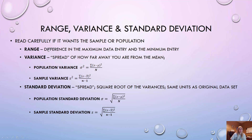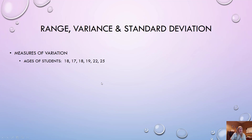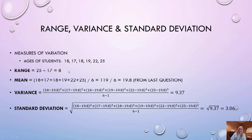Most of you will use a calculator or StatCrunch for variance and standard deviation, but I'll show the manual method too. Range is simply max minus min. Be careful whether the question says population or sample, because that affects what you divide by in the variance formula. Once you find the variance, take the square root to get the standard deviation.